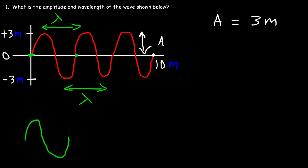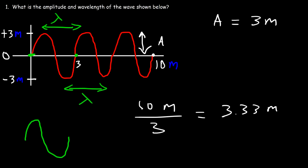In three cycles the wave traveled a distance of 10 meters. So we need to find the distance it travels in one cycle. That's going to be 10 meters divided by three, so the wavelength is 3.33 meters. At this position it's about 3.33, then 6.67, and then 10 meters.